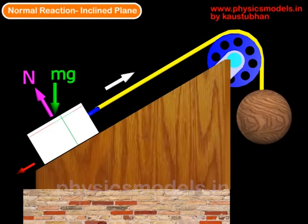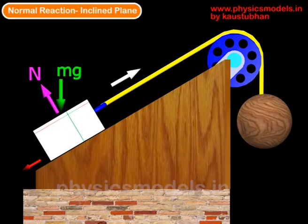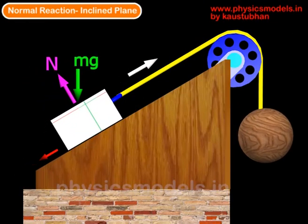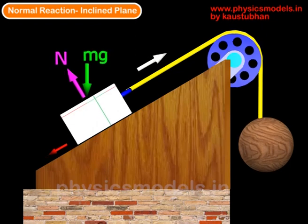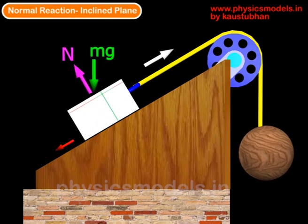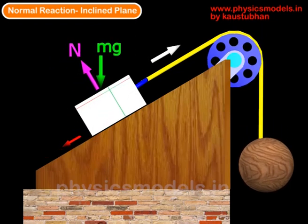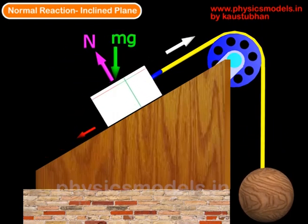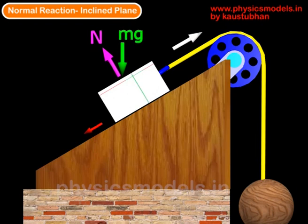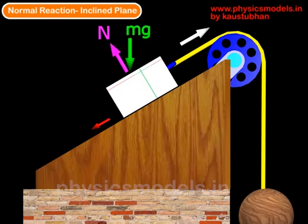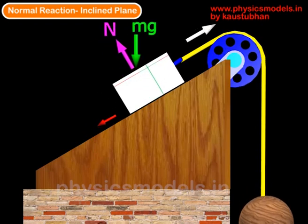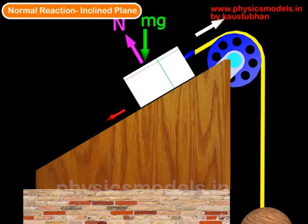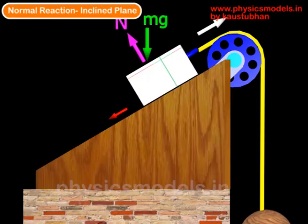In this video I'll talk about deriving the equation for normal reaction in an inclined plane. You can see a block sliding up a plane. The weight mg is shown as acting vertically downwards, and the normal reaction is perpendicular to the surface of the plane.